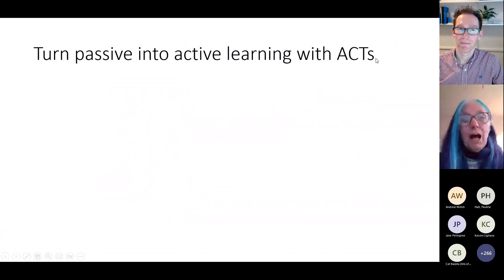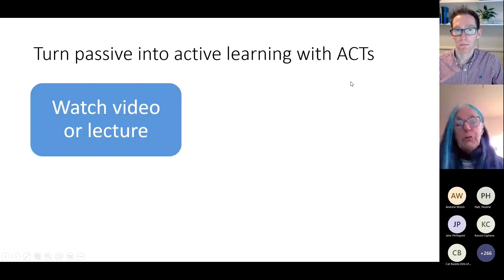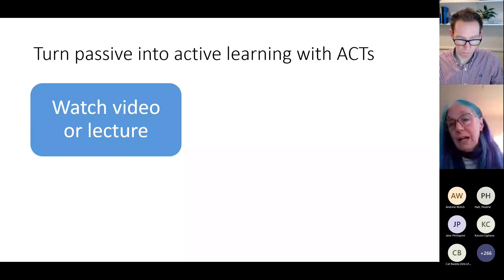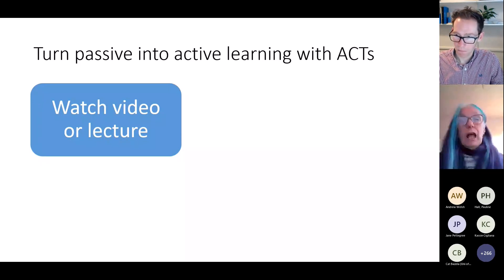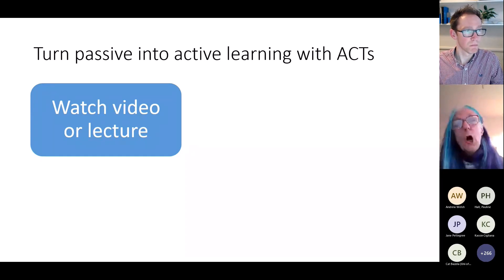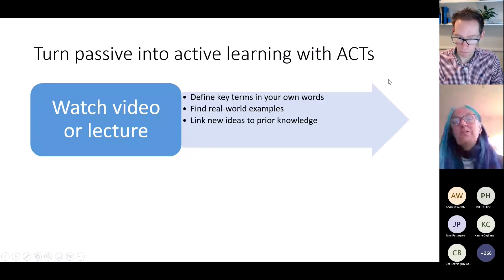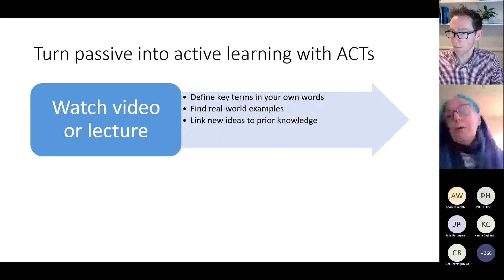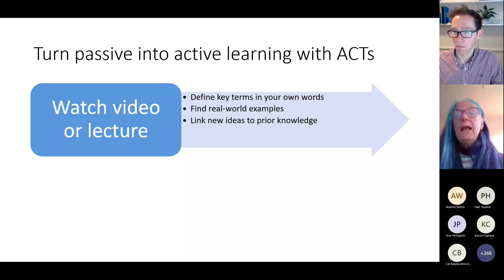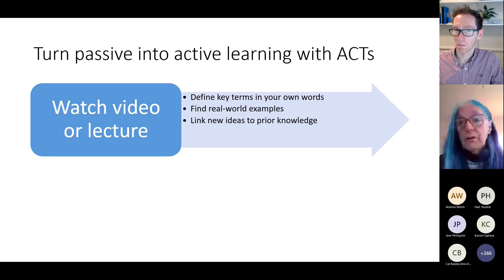So how can we turn passive learning into active learning with ACTs? I've got two broad categories. We often have students either watch video or come to a lecture, and if we don't give them an ACT, the ones in the middle and at the bottom are likely to just go into passive mode — just let it wash all over them and hope that some of it sticks. So we need to design in ways to help that material stick. Tell students what you want them to do: define the key terms in your own words, find real-world examples, link new ideas to prior knowledge — find whatever works for your context.